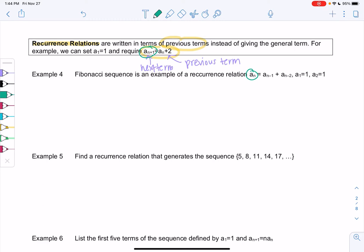This is telling me that a_n is equal to a_{n-1}, so that's another way of saying previous term. And then a_{n-2} would be the previous, previous term. So we already have the first two terms. We know a_1 and a_2 are both 1.